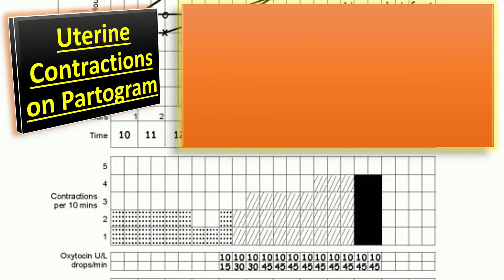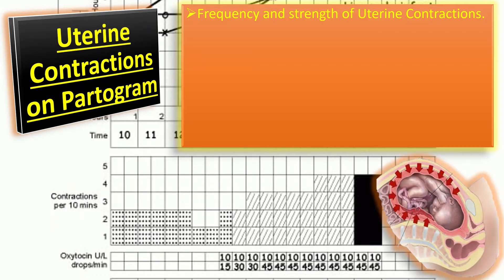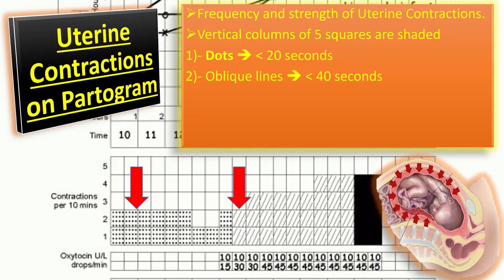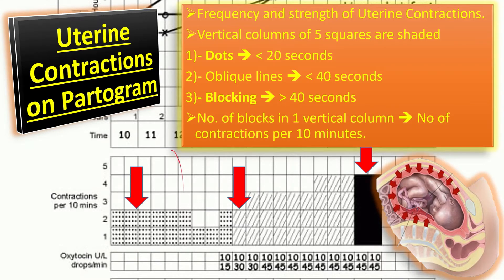Uterine contractions are plotted on a graph showing their frequency — the number of contractions in 10 minutes — and the strength according to duration. There are vertical columns of five squares which are shaded in different ways: dots for mild contractions of less than 20 seconds duration, cross-hatching or oblique lines for moderate contractions of less than 40 seconds, and blocking for strong contractions of more than 40 seconds. The number of blocks shaded in one vertical column shows the number of contractions per 10 minutes.